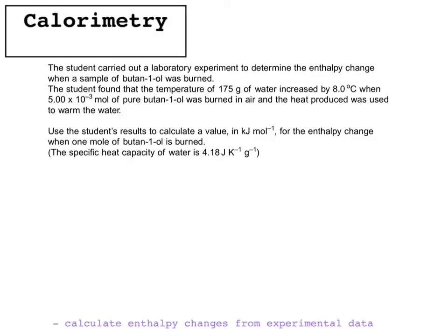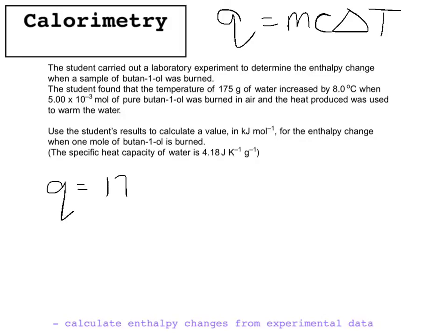Here you've been told how many moles have been used, so there's no need to work that out. You've got to work out how much energy has been given out, and to do that you use the equation Q = mcΔT. Q is the amount of energy given out, and m is the mass of whatever you are heating. Students sometimes use the wrong mass — it's always the mass of the thing you're heating. Here the temperature of the water increased, so we're heating the water, so our mass is 175.